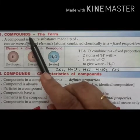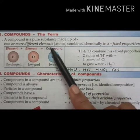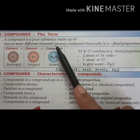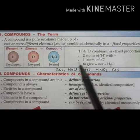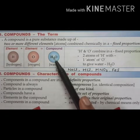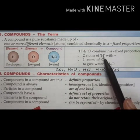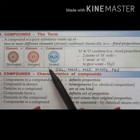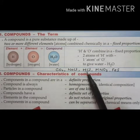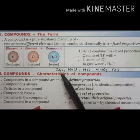Next is compounds. What is a compound? A compound is a pure substance made up of two or more elements — atoms of different elements combined chemically in a fixed proportion or fixed ratio. For example, water is a compound: one molecule of water is made up of two atoms of hydrogen combined in a fixed proportion with one atom of oxygen. Other examples include carbon dioxide, sodium chloride, hydrogen chloride, nitric acid, and iron sulfide — all are compounds.